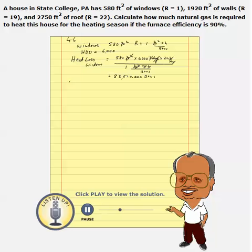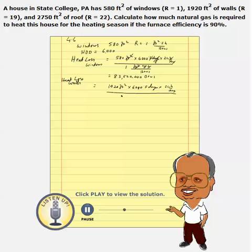Now let's calculate heat loss through walls. That will be 1,920 ft² for walls, HDD is again 6,000, and there are 24 hours in a day, divided by the R value of the walls, which is given as 19 ft²·°F·hr/BTU. Canceling units, the heat loss from the walls appears to be 14,551,579 BTUs.